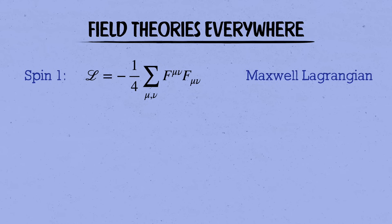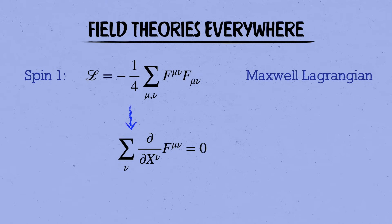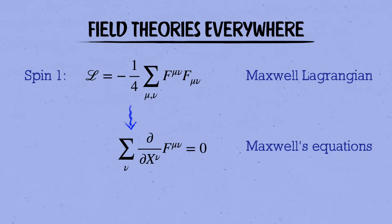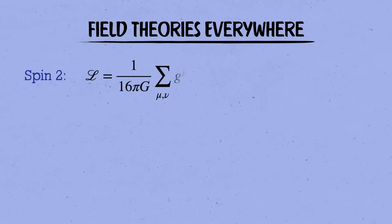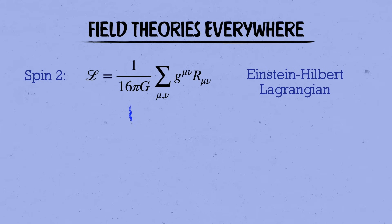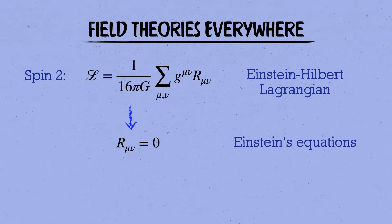Spin one fields like the photon are described by the Maxwell Lagrangian, whose equations of motion are Maxwell's equations, which you'll learn about in a college class on electromagnetism, though probably using a notation that makes them look much uglier. Finally, coming back to where we started at the beginning, gravity is described by a spin two field with the Einstein-Hilbert Lagrangian, and whose equations of motion are Einstein's equations. Again, I haven't said what any of these symbols mean, but let me know in the comments if you want to learn more about this in future videos, and make sure you're subscribed to the channel.